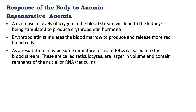Now, how does the body respond to anemia? We're going to look at regenerative anemia. First, there's a decrease in oxygen levels in the bloodstream, and this is going to lead to the kidneys being stimulated to produce the hormone erythropoietin. Erythropoietin stimulates the bone marrow to produce more red blood cells. If the demand is high, some immature forms of red blood cells may be released into the bloodstream, and these are called reticulocytes. They are larger in volume and contain remnants of the nucleus or RNA, which we term as reticulum.